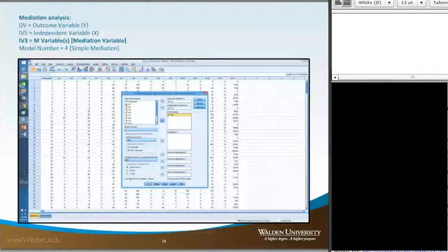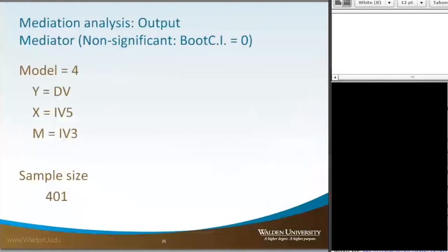Now, to run another analysis with another variable, we're going to go back to SPSS. This time we're going to swap out variable number 6 for variable number 3. We'll keep everything else the same. We click on the OK button. We get our output, which is model 4. We've got our DV, variable number 5 is X, and our mediator is variable number 3. Sample size is the same.